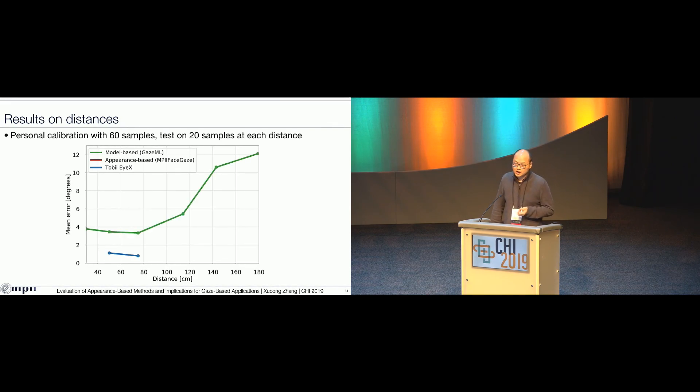The model-based method can output gaze from the user at different distances, but when it comes to longer distances, it becomes more difficult to detect the pupil and detect iris, so that the gaze estimation error becomes much worse. In contrast, the appearance-based gaze estimation method can output robust performance at different distances. Although the appearance-based gaze estimation has a gap with the Tobii RX, which is around two degree gaze estimation accuracy.